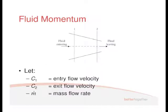If we look at that pipe, C1 is the entrance velocity — C is velocity, one is the entrance flow — and C2 is the exit flow. We have the mass flow rate M dot. We need to make sure you know what M dot stands for; it's on your formula sheet.